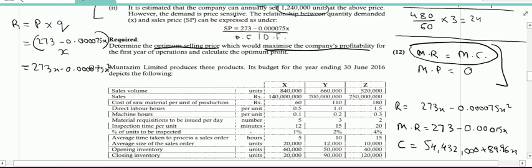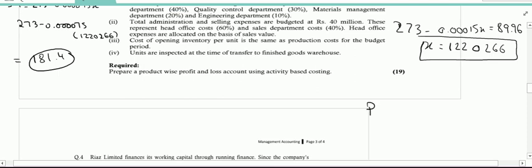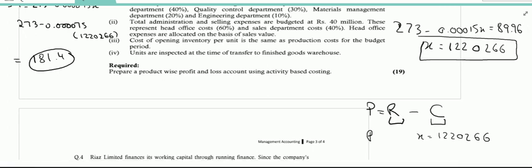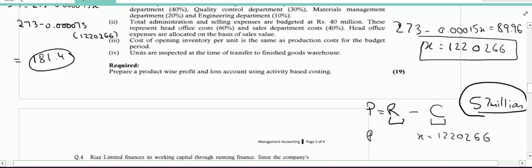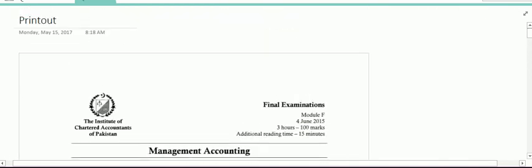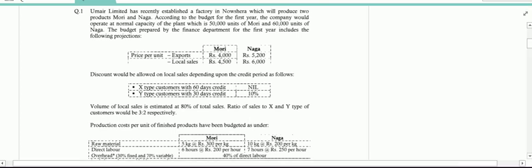The second part says which would maximize the company's profitability for the first year of operations and calculate the optimum profit, optimum or maximum profit. For maximum profit, I'm not solving it, I'm just writing the function profit is equal to revenue minus cost. So what you will do is write the revenue function, subtract the cost function. When you get the profit function, put X is equal to 1220266 and your final answer for profit value would be somewhere around 57 million. Thank you for watching all three videos. Hope these three videos were helpful for BFD and MAC students to tackle the derivative question if the examiner asks the question again. It was last tested in summer 2015 exam. Thank you.